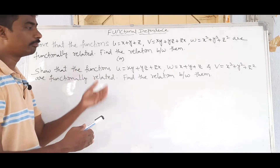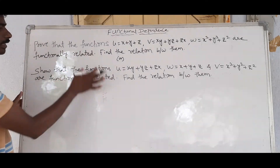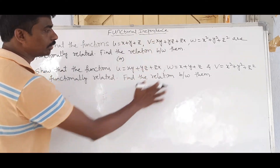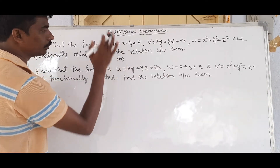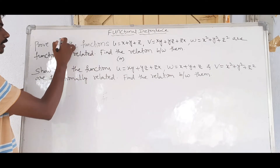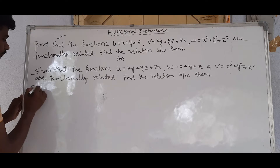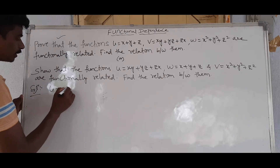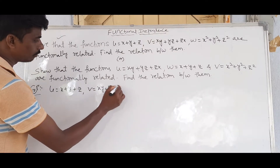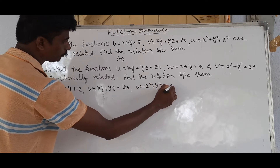Now let's take the specific problem. We have: u is equal to x plus y plus z, v is equal to xy plus yz plus zx, and w is equal to x squared plus y squared plus z squared. There are three variables, so we need a 3-by-3 determinant.